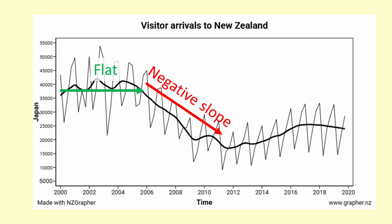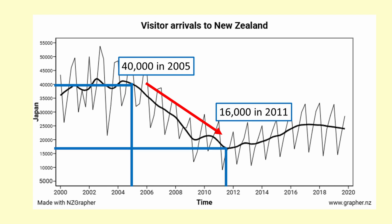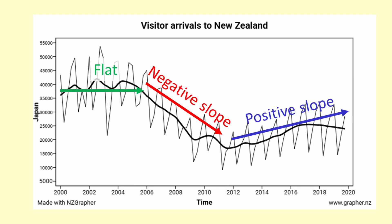When we want to write about a trend it is good to quantify the slope. So we would say that the quarterly number of visitors to New Zealand from Japan decreased from 40,000 to 16,000 over the years 2005 to 2011. Note that we also make sure to give the context and the units. Then we would say there was a gradual increase from 2011 to 2020, going from 16,000 to 23,000 over the nine years.